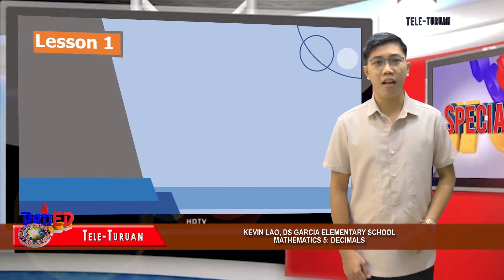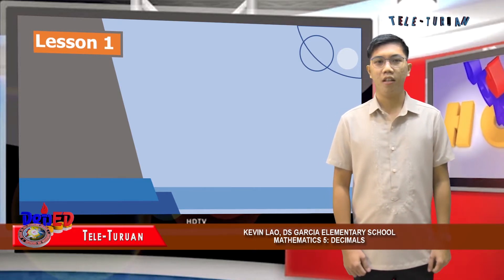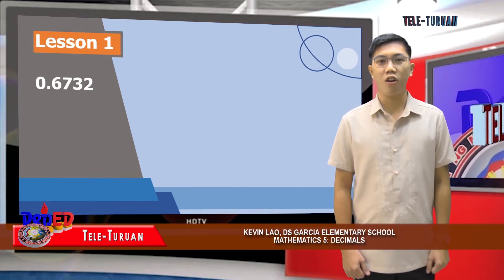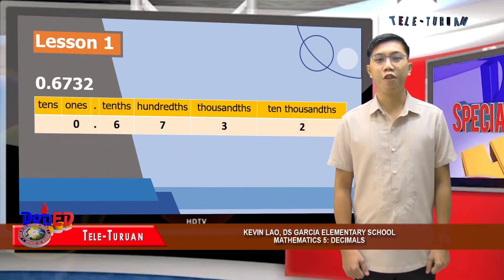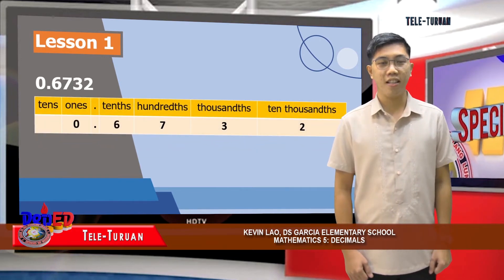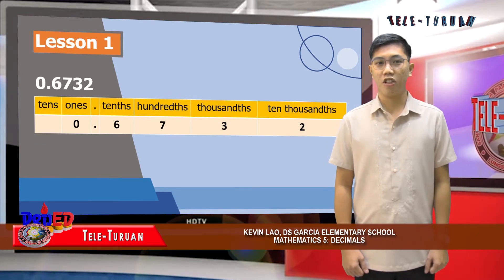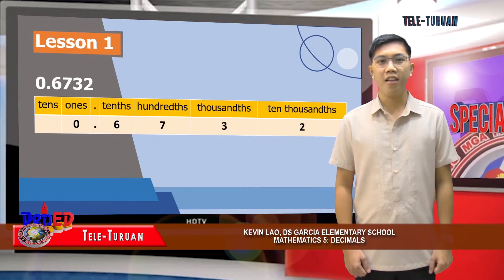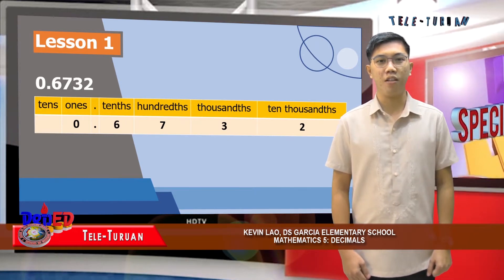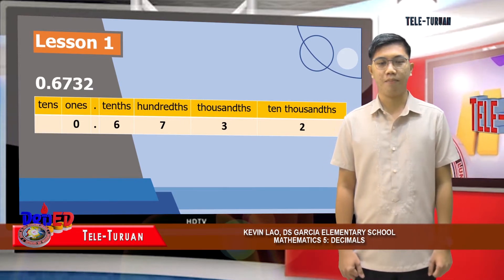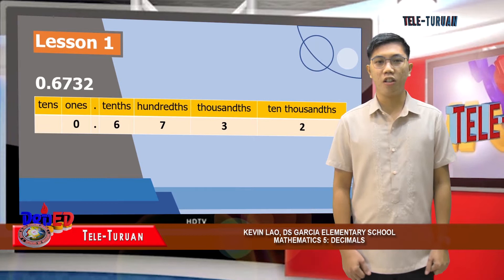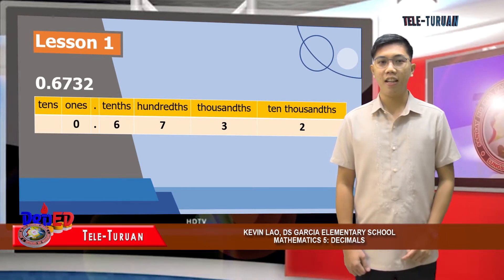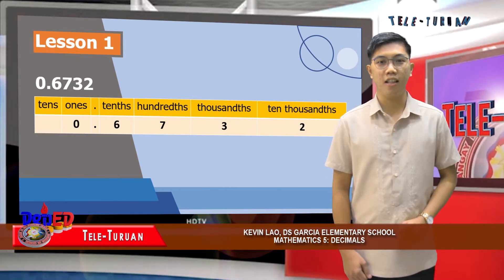Let's study its place value and value. The number six thousand seven hundred thirty and two ten-thousandths can be placed on a place value chart. The first digit after the decimal point represents the tenths place. The next digit after the decimal represents the hundredths place. The remaining digits continue to fill in the place values until there are no digits left. The place value of a digit to the left is ten times that of the digit to the right.